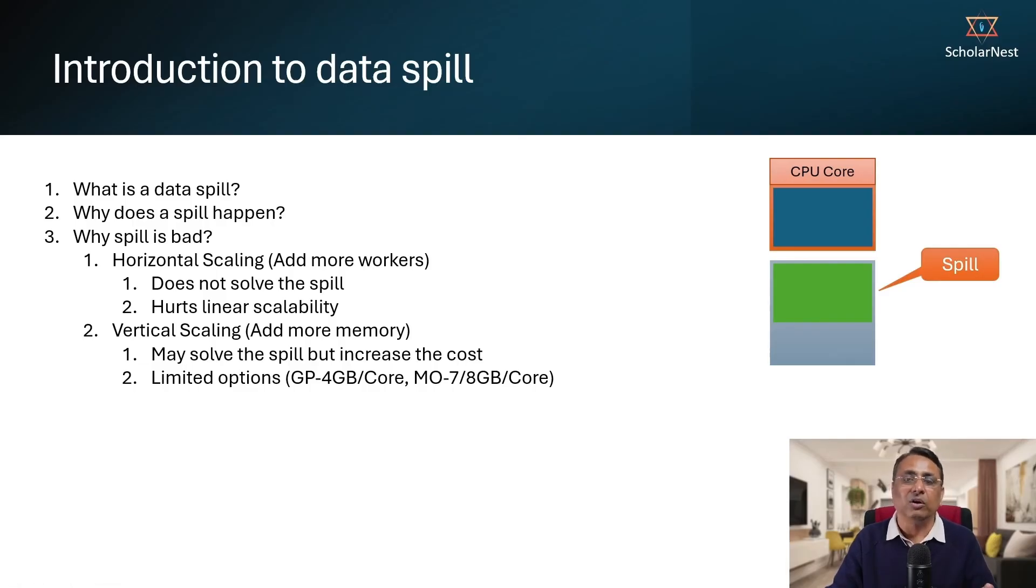So that Spark can continue processing. And then once whatever is there in the memory is completed or is processed, then Spark will again swap it. Whatever is processed, move it to the disk and whatever is not processed will bring it to the memory for the rest of the processing. That's what the spill is. Moving data from memory to disk, disk to memory, that is what we call data spill.